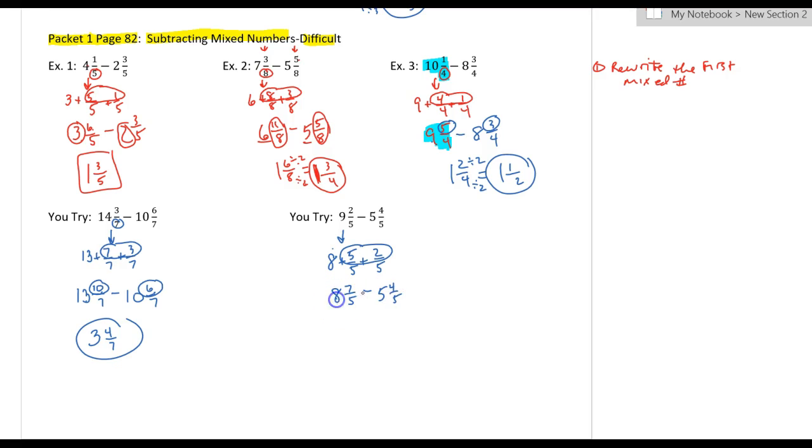So now, eight minus five is three. Seven minus four is three. So you get three and three-fifths.